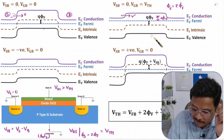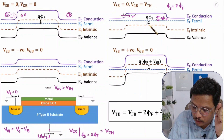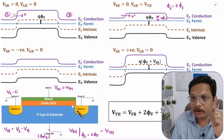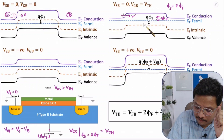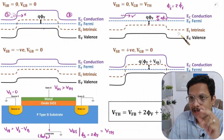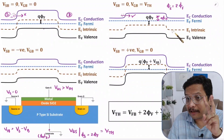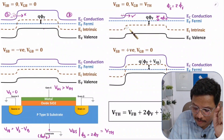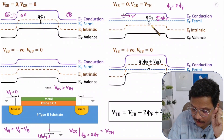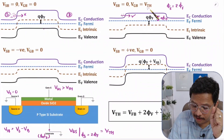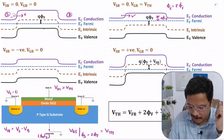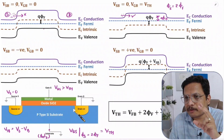As the intrinsic energy goes down, there is an initiation of an inversion layer. If intrinsic energy goes down, threshold voltage decreases. When this intrinsic energy goes from above to below the Fermi level, there is a beginning of an inversion layer between source and drain which allows current flow.